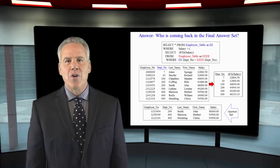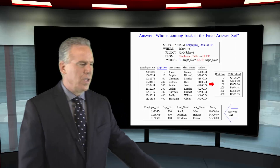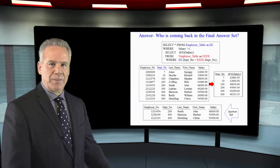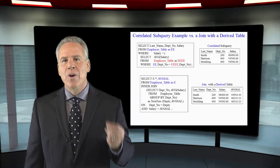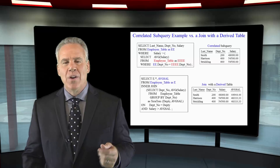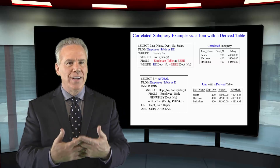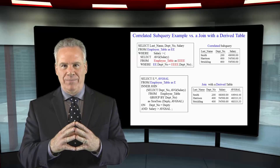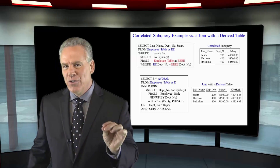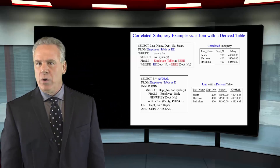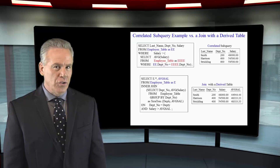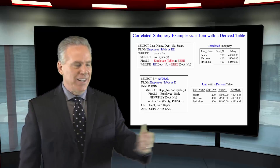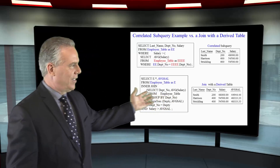Three rows came back from our example: Smith, Harrison, and Strickling. I wanted to know which employees made a greater salary than the average salary within their own department. I could do this with a correlated subquery, which we just saw, but I also could have joined the employee table with a derived table, as I've done in my second example.